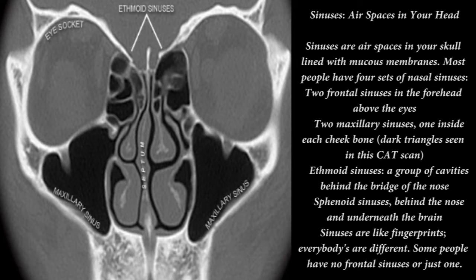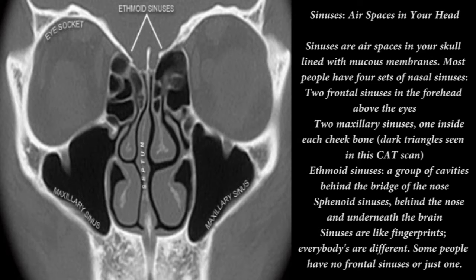Sinuses are air spaces in your skull lined with mucous membranes. Most people have four sets of nasal sinuses: two frontal sinuses in the forehead above the eyes; two maxillary sinuses, one inside each cheekbone, seen as dark triangles in this CAT scan; ethmoid sinuses, a group of cavities behind the bridge of the nose; and sphenoid sinuses, behind the nose and underneath the brain. Sinuses are like fingerprints — everybody's are different. Some people have no frontal sinuses, or just one.